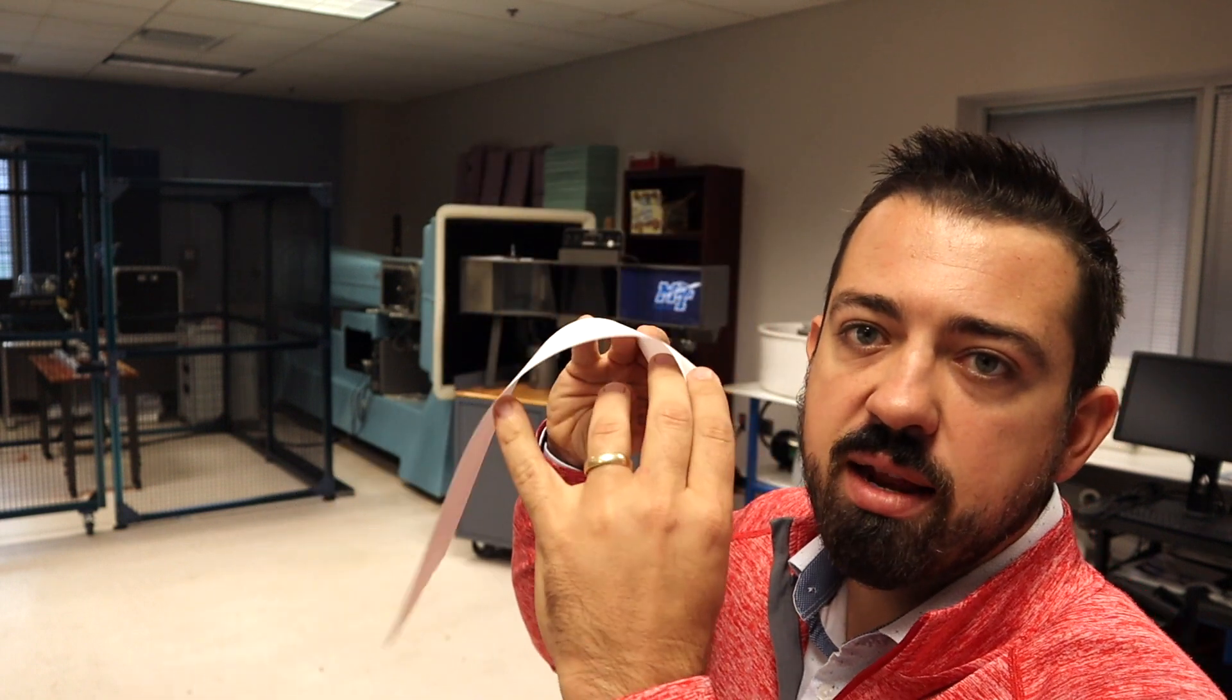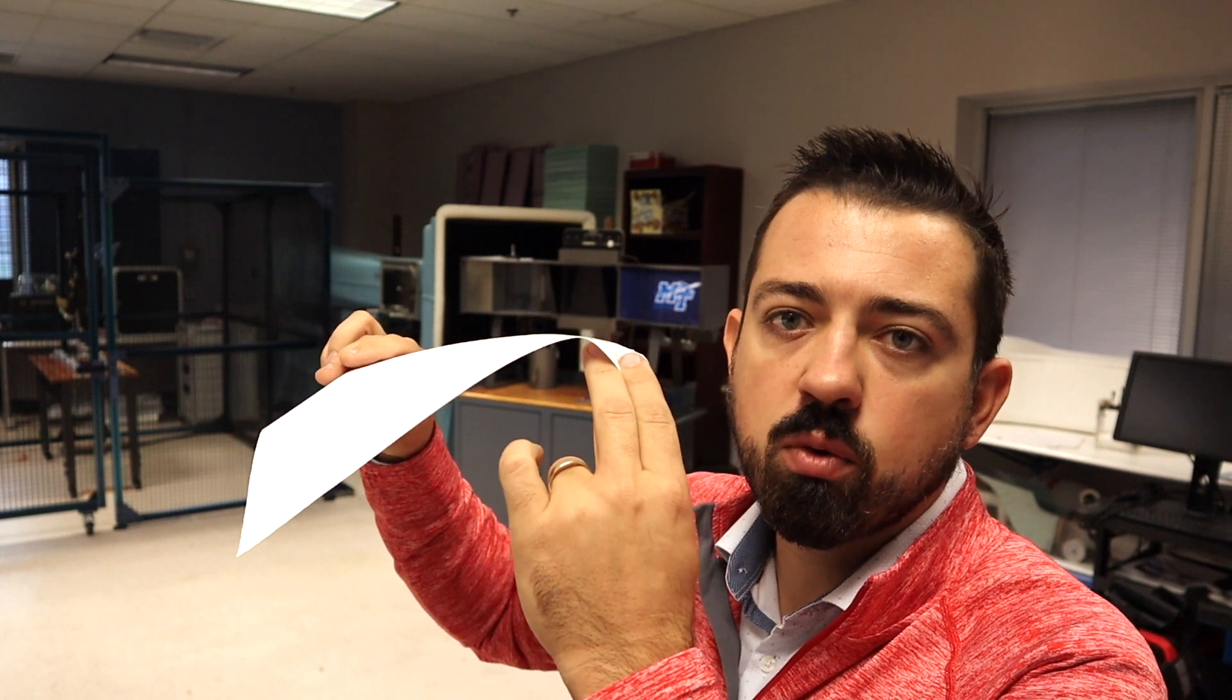This might be the easiest demonstration for you to do yourself. All you need is a blank sheet of paper. Based on Bernoulli's principle, as velocity increases, pressure decreases. If I take a sheet of paper and shape it like an airfoil with some curvature from the side, and blow over the top of it, we should see the paper come up because of the high pressure underneath pushing up, just like an airplane wing.